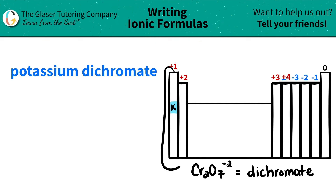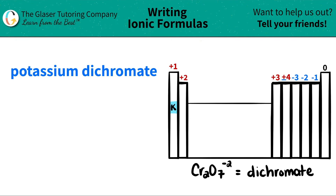Group one is all metals — they're alkali metals, except for hydrogen. Hydrogen is a non-metal, but they all share the common charge of being a plus one. So potassium, K, has a plus one charge.